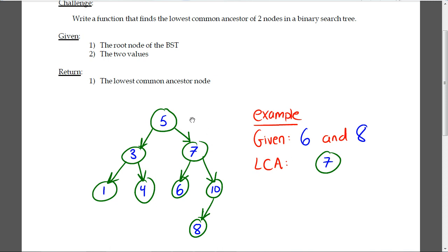5 and 7 are the two common ancestors of 6 and 8. The lowest one between 5 and 7 is of course 7. Your function is going to have to return 7 as the lowest common ancestor node.